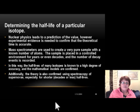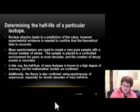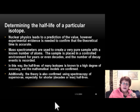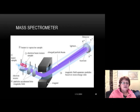The age of the Earth can also be confirmed using spectroscopy of supernovae, especially for isotopes with shorter half-lives. The next slide shows a diagram of how a mass spectrometer works.